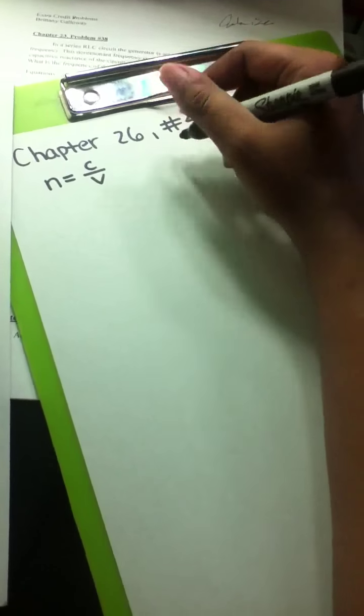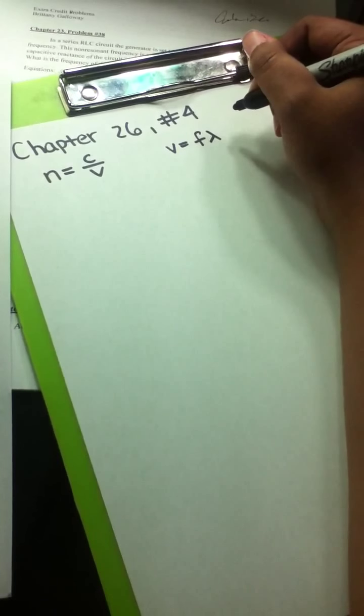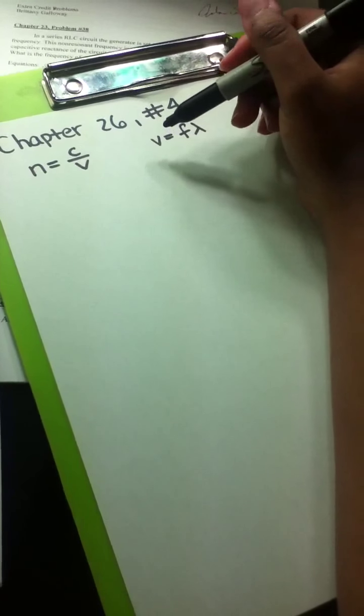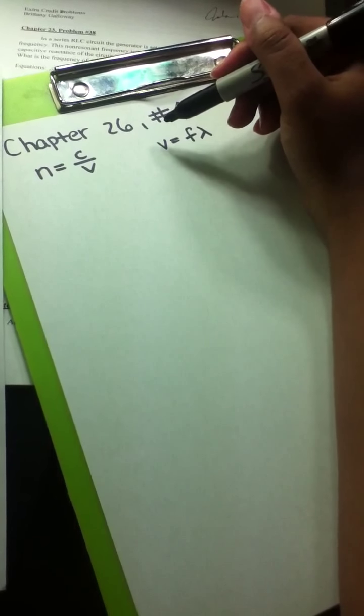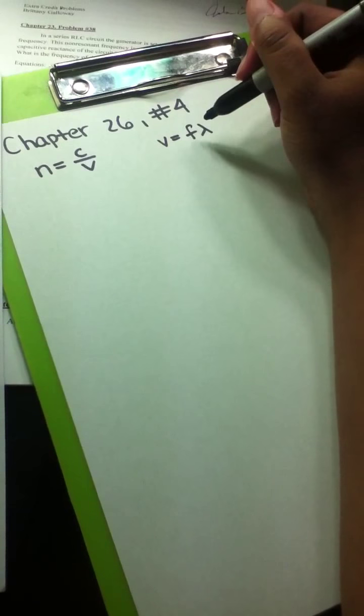For this problem, we are going to use two different equations. The first equation is the index of refraction, which is equal to the speed of light over the speed of light in the material — where C is the speed of light in a vacuum. The second equation, which can be found in Chapter 16, is that the velocity of light in the material is equal to the frequency times the wavelength.